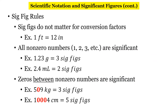Here are the six rules for significant figures. The first: sig figs do not matter for conversion factors — we'll come back to this when we get into conversions and stoichiometry. The second rule, and the first one that really matters right now: all non-zero numbers — digits one through nine — are significant. So in the first example we have three non-zero numbers, all three matter. In the second example, we have two and four — both non-zero — so we have two sig figs. Any digit that is not a zero is significant.